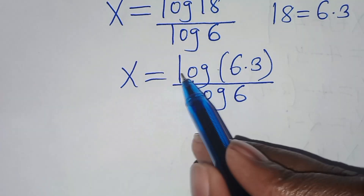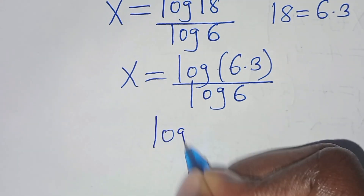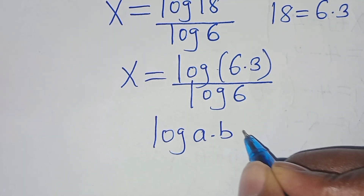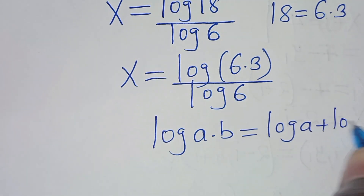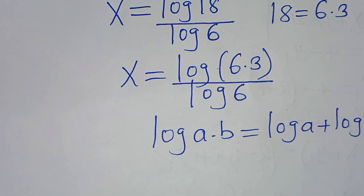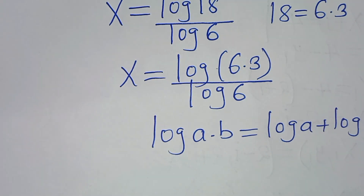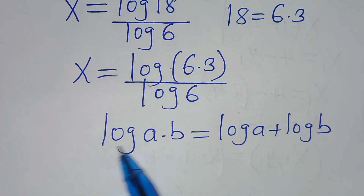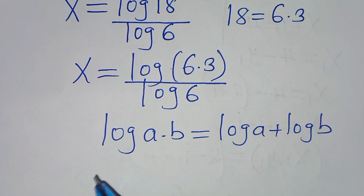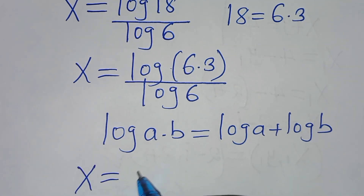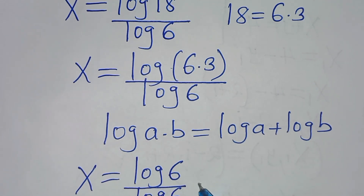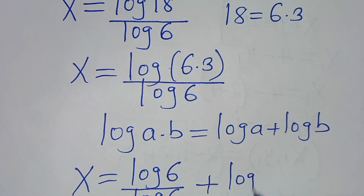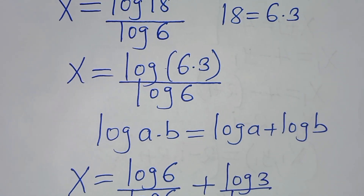Now, log of 6 times 3 is in the form of log(a × b), which we can express as log a plus log b. Applying this logarithm product property, then we have x is equal to log 6 divided by log 6, plus log 3 divided by log 6.